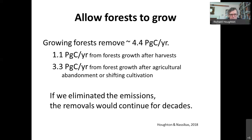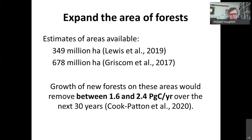The third element — and the second that produces negative emissions — is to expand the area of forests. The estimates of how much land is available really vary by almost a factor of two, from 350 million to 678 million hectares — for comparison, about one third to two thirds of the entire area of the United States. The growth of new forests in these areas would remove something on the order of one and a half to two and a half petagrams of carbon over the next 30 years, and then it would continue to grow.